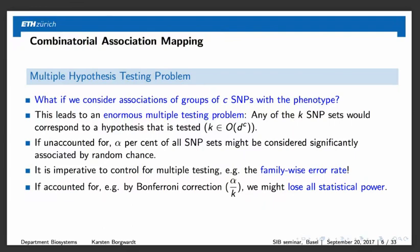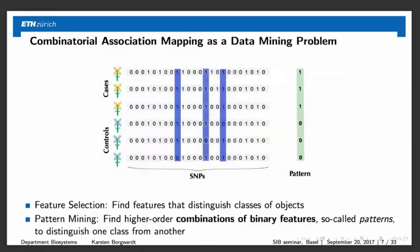In many domains — both in genetics and in data mining and machine learning — this was long considered an unsolvable dilemma: you either suffer from extremely many false positives, or you lose all statistical power when properly correcting for multiple hypothesis testing. However, recently there were a number of advances in the field of significant pattern mining, mainly by the group of Tsuda at the University of Tokyo in Japan and by my lab, which are bringing us closer to a solution — and in some instances actually solve the problem in very interesting settings.